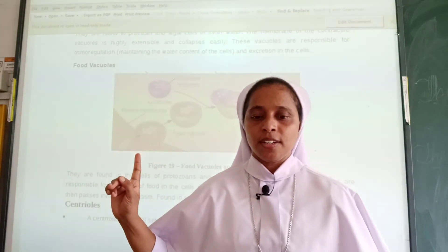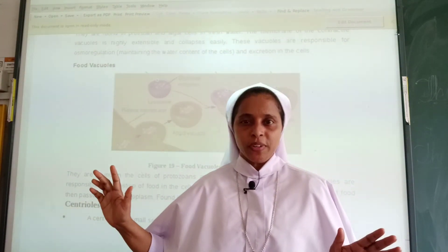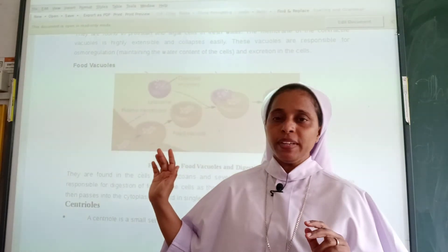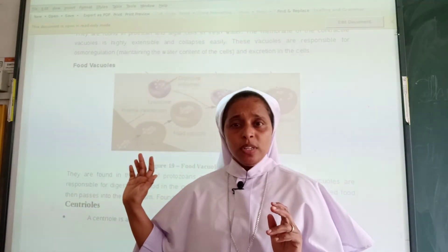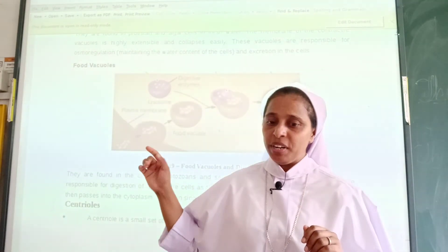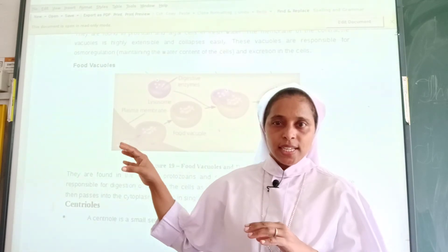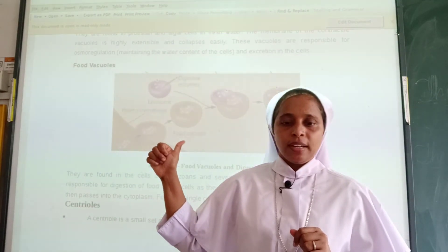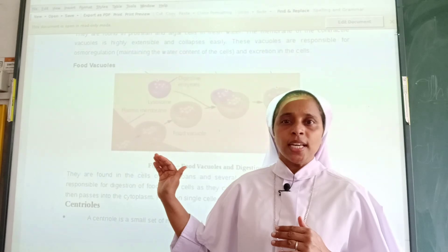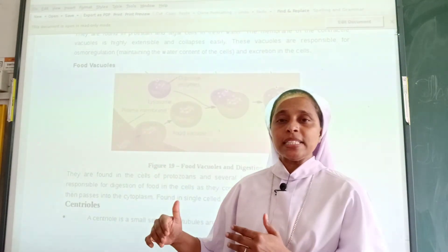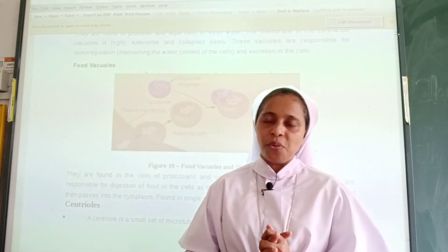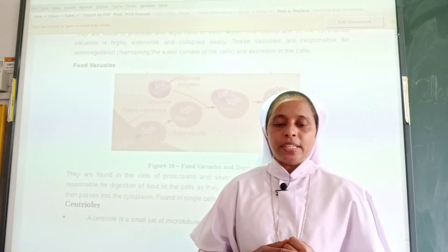Now let us see about food vacuoles. These are found in several protozoans and lower animals. Food vacuoles are responsible for the digestion of food inside the cells, as they contain enzymes. This digested food passes into the cytoplasm. An example of an organism with food vacuoles is the amoeba.